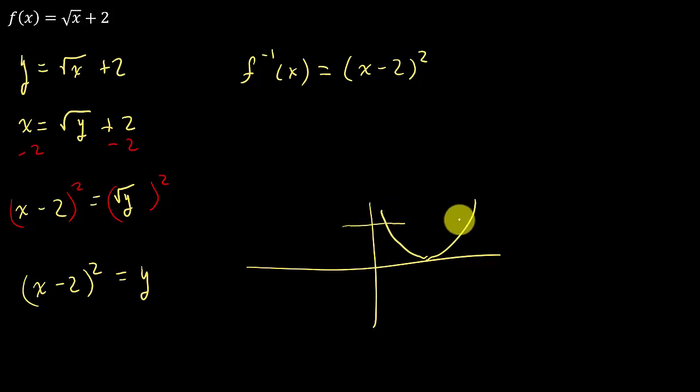See, it fails the horizontal line test, but if I erase that part of the graph, it's now one to one. Okay? That's restricting the domain. So how do we restrict the domain?